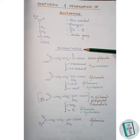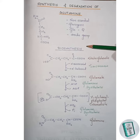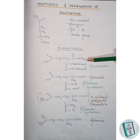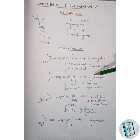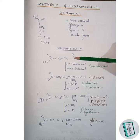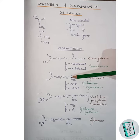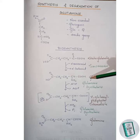Now let us move on to the biosynthesis of glutamine. The biosynthesis starts with alpha-ketoglutarate. First, alpha-ketoglutarate gets transaminated by the transaminase enzyme to form glutamate. Here this keto group gets replaced by an amino group, and glutamate is formed.